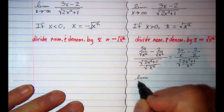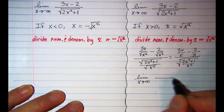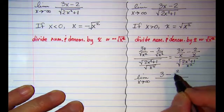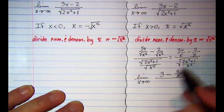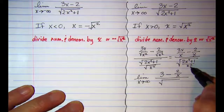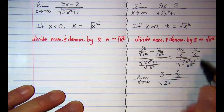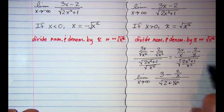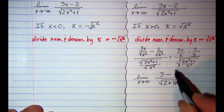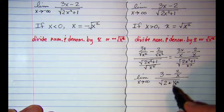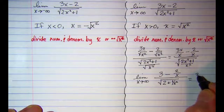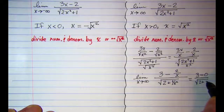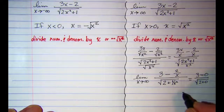The limit as x approaches positive infinity simplifies to 3 minus 2 over x in the numerator, and the radical simplifies to 2x² divided by x² which is just 2, plus 1 over x², in the denominator. As x approaches infinity, the fraction 2/x approaches 0 and 1/x² approaches 0, so our limit is 3 minus 0 over the square root of 2 plus 0, which simplifies to 3 over √2.